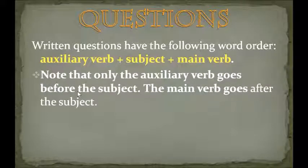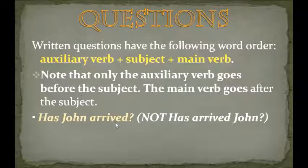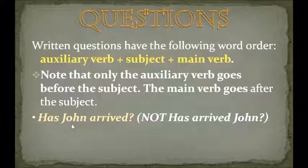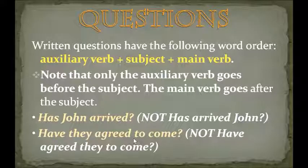The main verb goes after the subject. Let's check an example: 'Has John arrived?' Here, 'has' is the auxiliary verb, then 'John' the subject, then the main verb 'arrived.' We can't write it as 'has arrived John.' Another example: 'Have they agreed to come?' — not 'have agreed they to come.' The verb gets split, and the subject takes the place between the auxiliary verb and the main verb. This is the most important inversion that happens with questions.